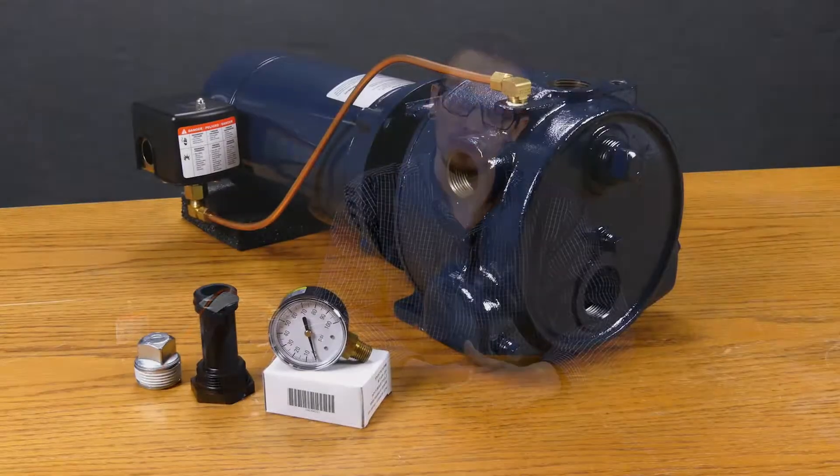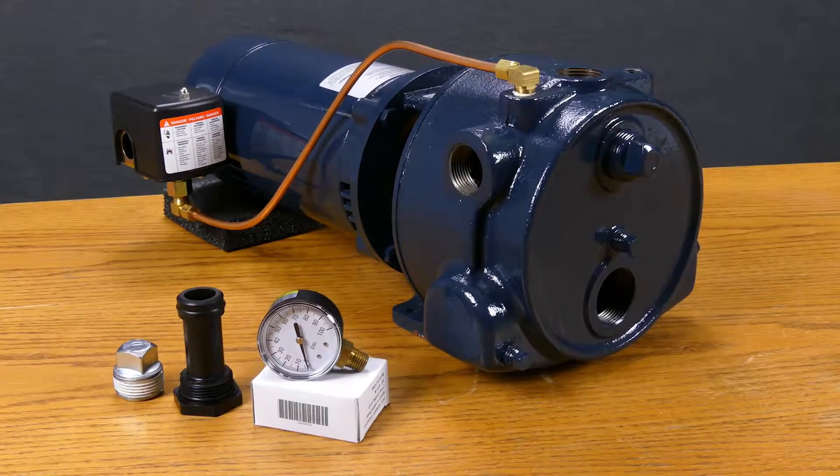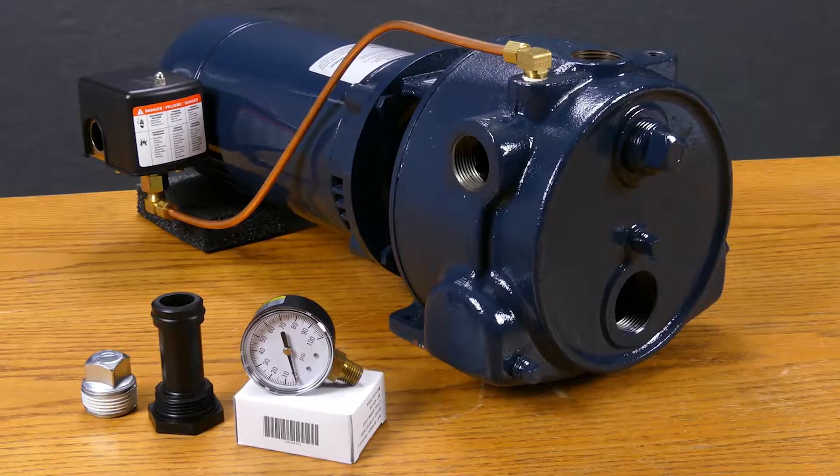The casing is made of durable heavy duty cast iron that utilizes a powder coated epoxy finish to further protect the pump from rust and corrosion. A thermoplastic diffuser is coupled with the stainless steel impeller for efficiency and dependability.